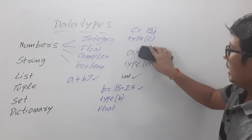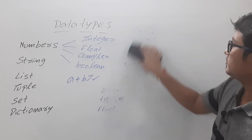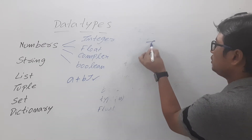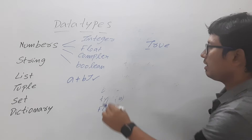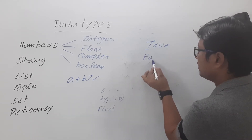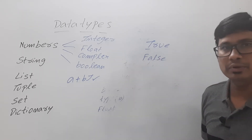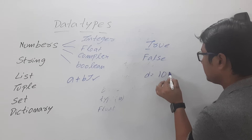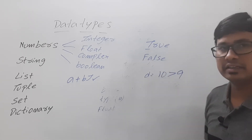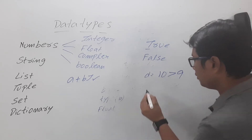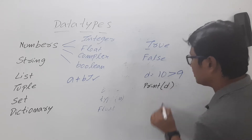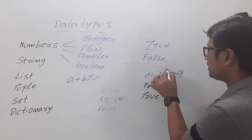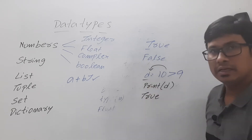Now let me discuss boolean variables. Boolean variables can have either True or False. True is written with a capital T and False with a capital F. For example, if I write d = 10 > 9 and then print d, it will display True because 10 is greater than 9, so the condition is true and True will be assigned to d.